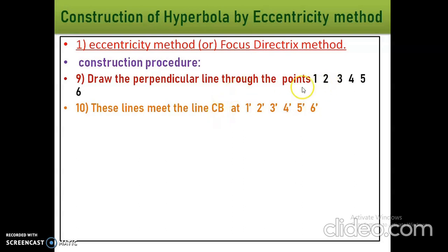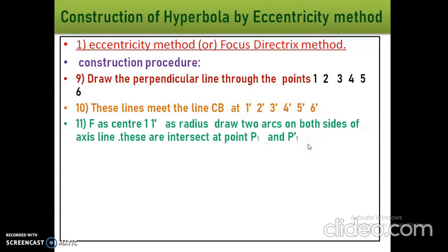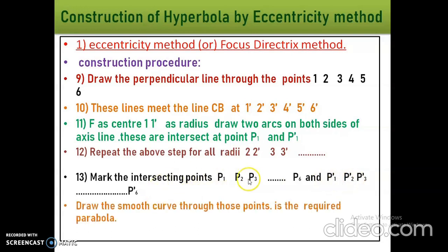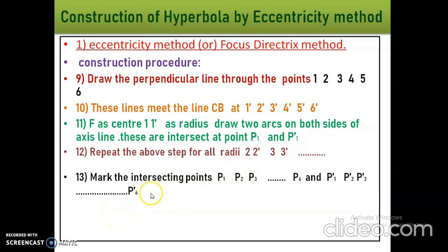Eleventh point: with F as the center and 1–1 dash as the radius, draw arcs on both sides of the axis line to get intersecting points P1 above and P1 dash below. Repeat this step for all radii: 2–2 dash, 3–3 dash, 4–4 dash, and so on to get intersecting points P1, P2, P3... P6, and P1 dash, P2 dash... P6 dash.